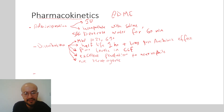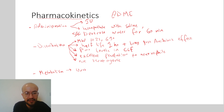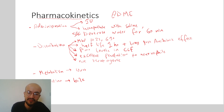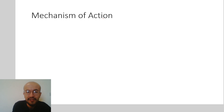The metabolism of these agents occurs in the liver, and excretion is through the bile. There is no dose adjustment needed for people with renal failure, but dose adjustment is required for people with hepatic failure.